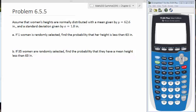This is a problem from section 6-5, a problem similar to your homework. It says that we assume that women's heights are normally distributed with a mean of 62.6 and a standard deviation of 1.8.